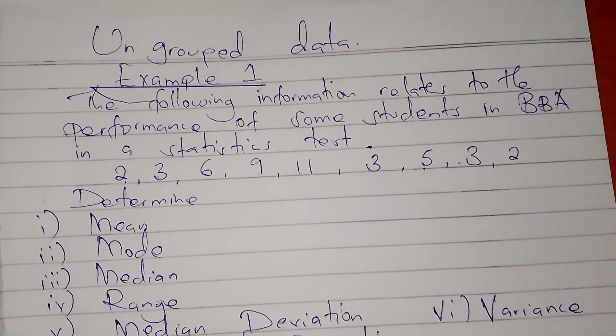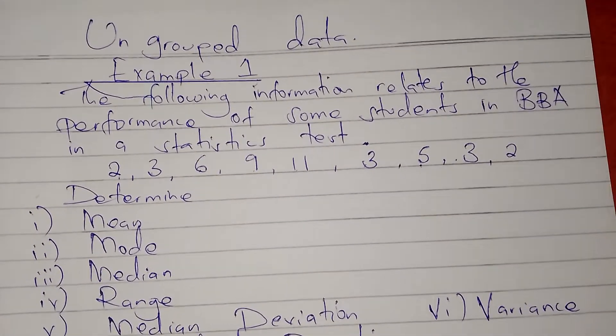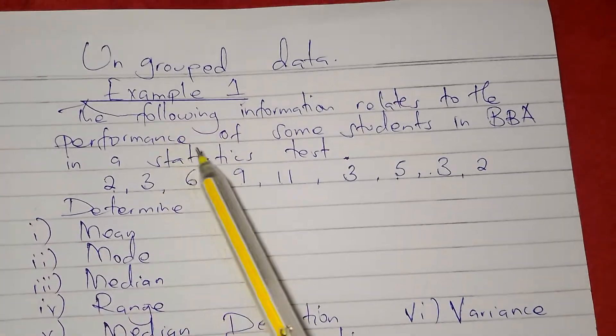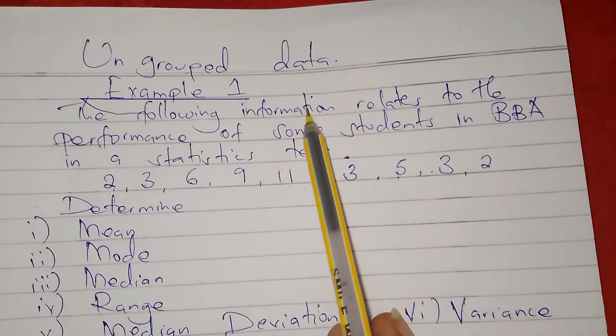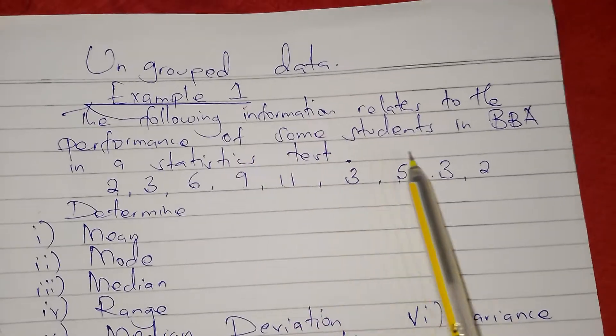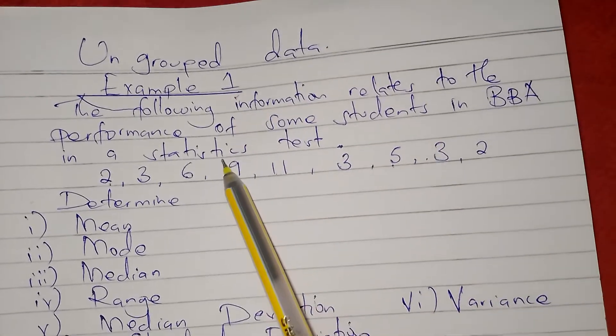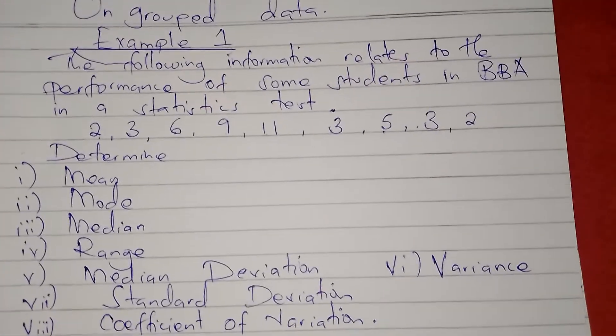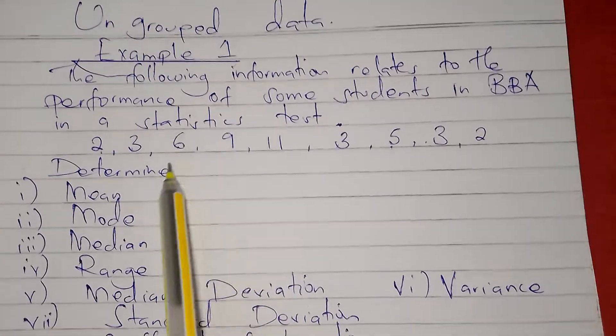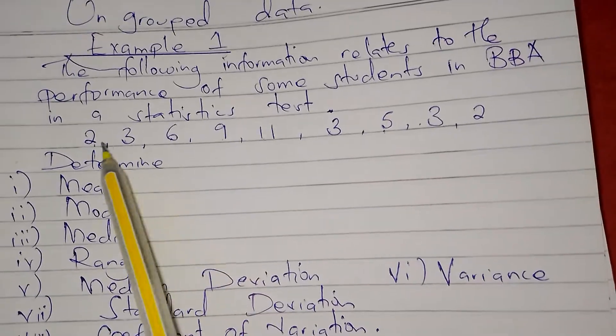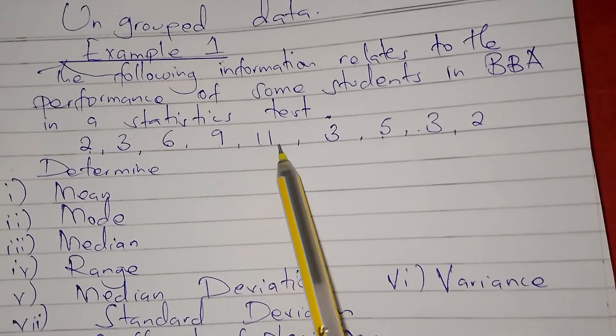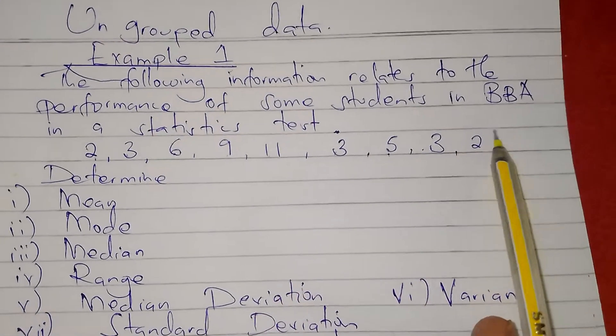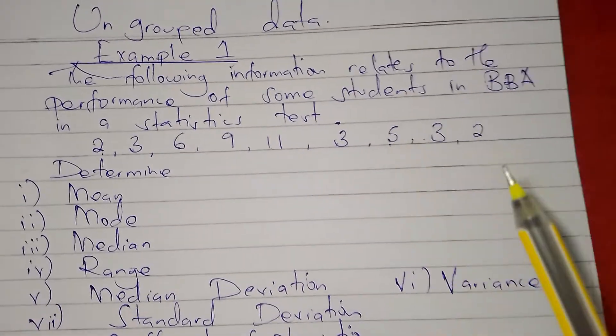Let's look at an example on ungrouped data. Example one: the following information relates to the performance of some students in BBA in a statistics test, a coursework test. So these are the marks: 2, 3, 6, 9, 11, 3, 5, 3, 2.